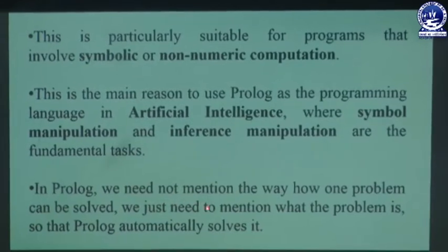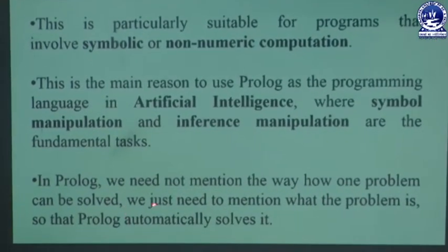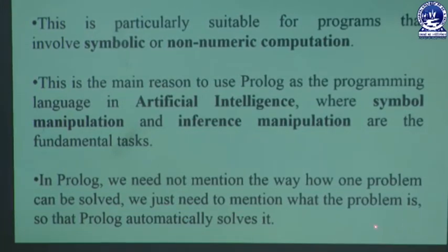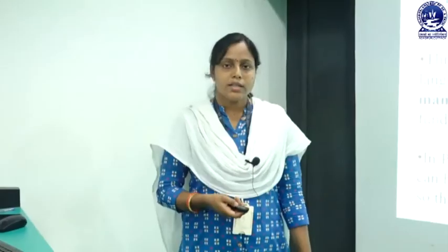Prolog programming is basically used for symbolic and non-numeric programs. In artificial intelligence there are many symbols and inference rules, which is why Prolog programming language is basically used for artificial intelligence. In Prolog programming language, we need not mention the way how one problem can be solved — we just need to mention what the problem is so that Prolog automatically solves it. We only specify which problem we have to solve; we don't specify how to solve it.